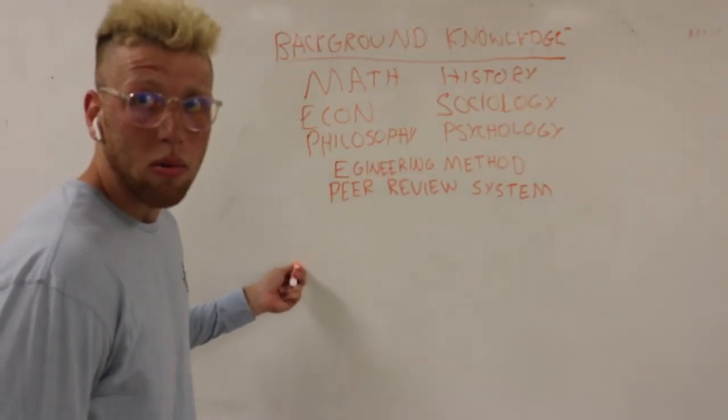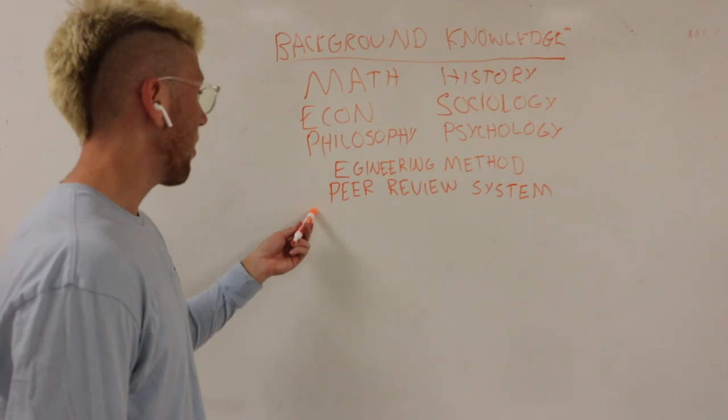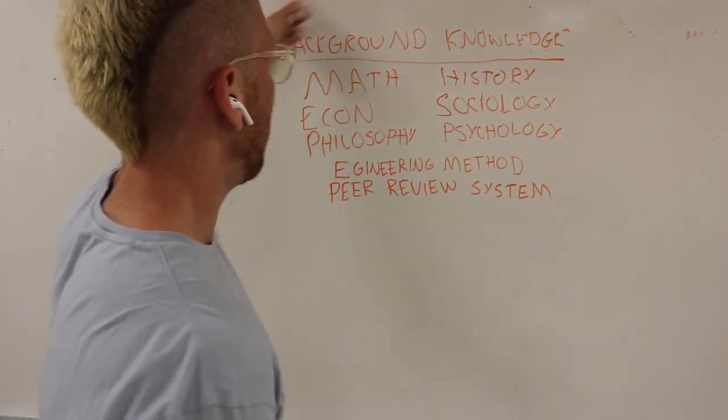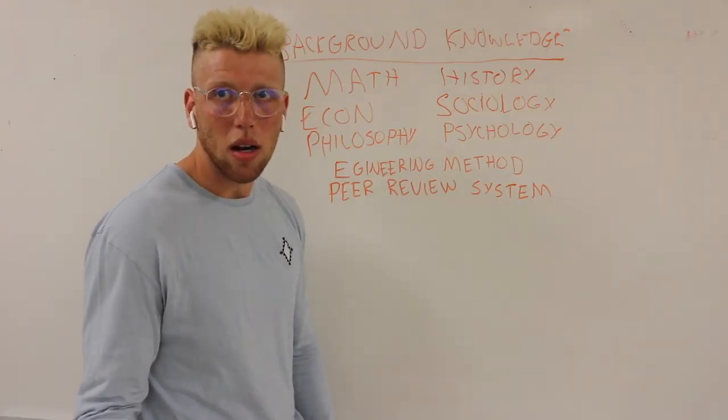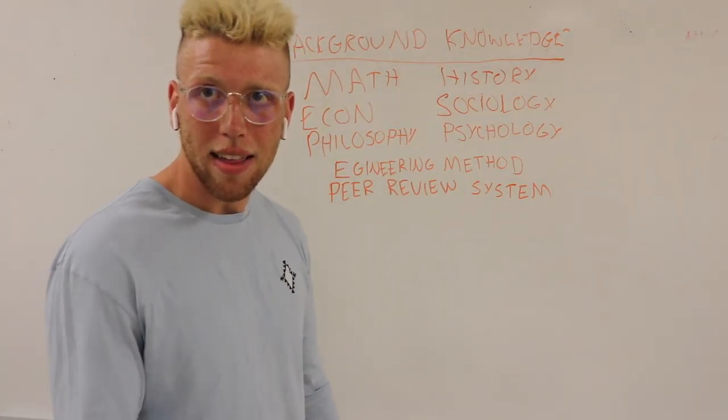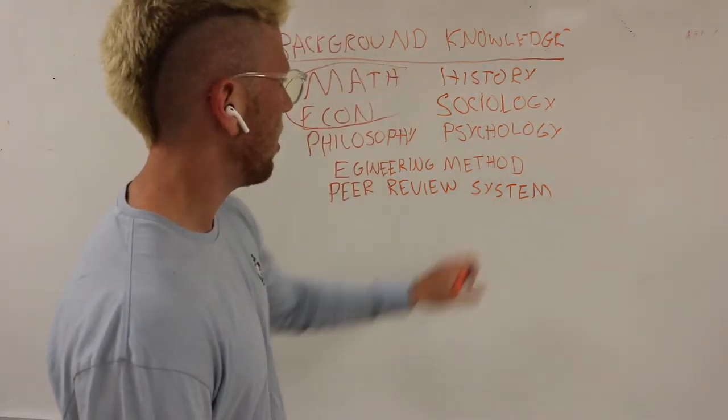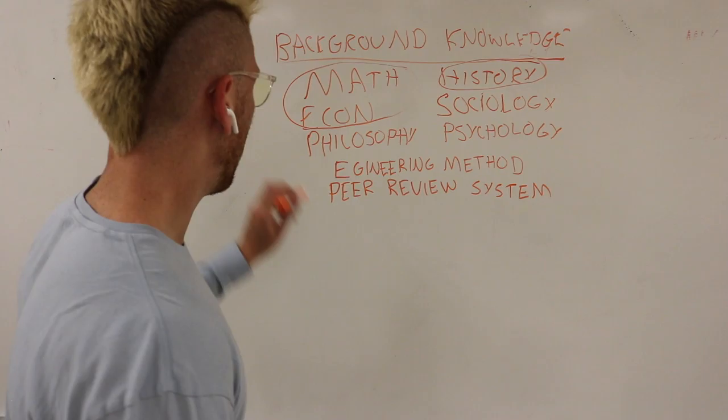Now, I don't think you can find an undergraduate program in the country that will provide you this background framework, which is a problem. Like, we're talking about some of the most important things in this class. Anyway, we're going to pick from math and econ, and a little bit of history. And we're going to come over here, and we're going to talk about the Pareto distribution.